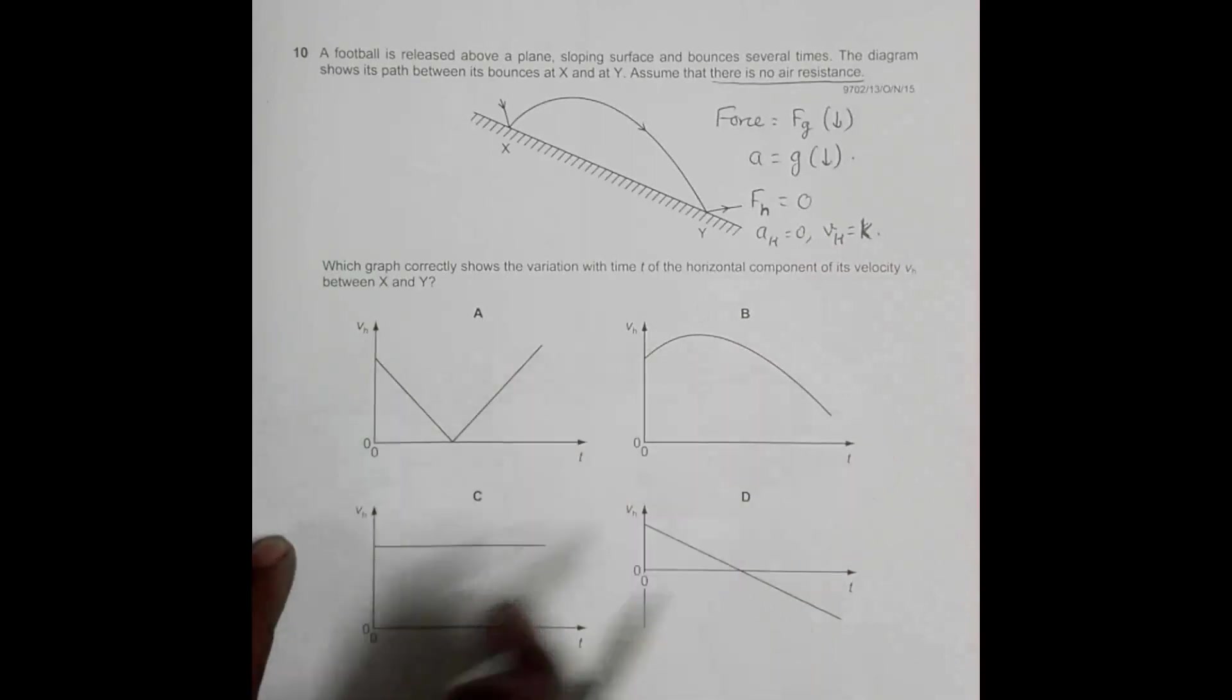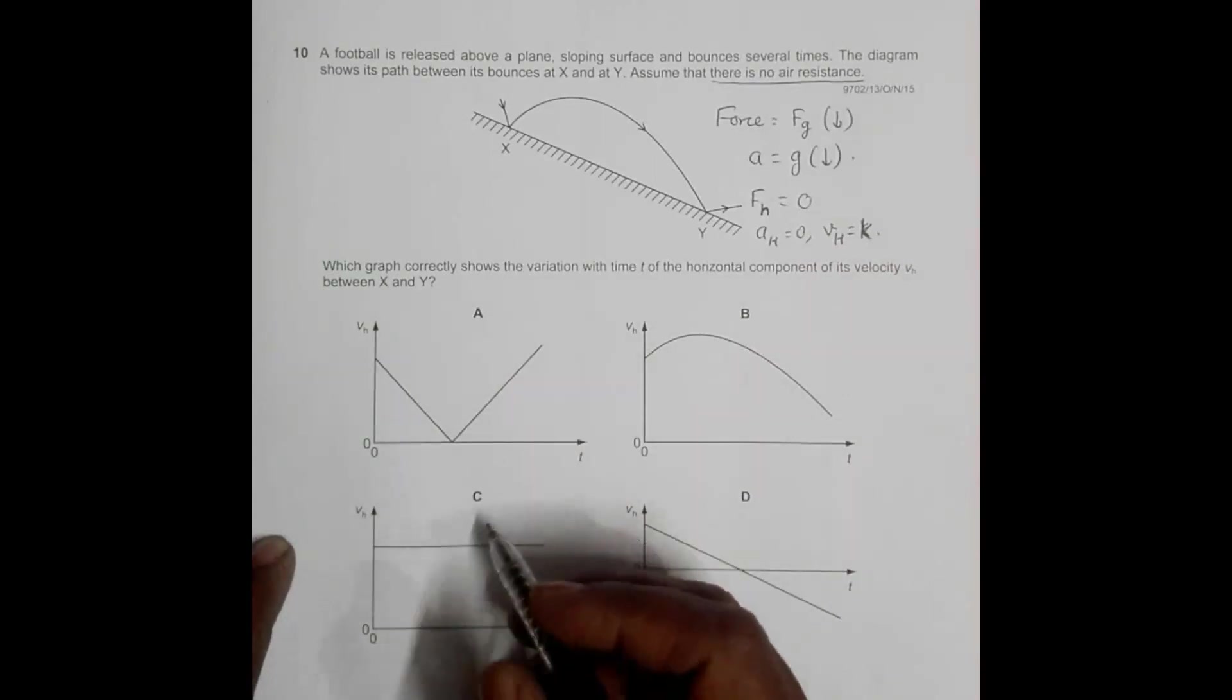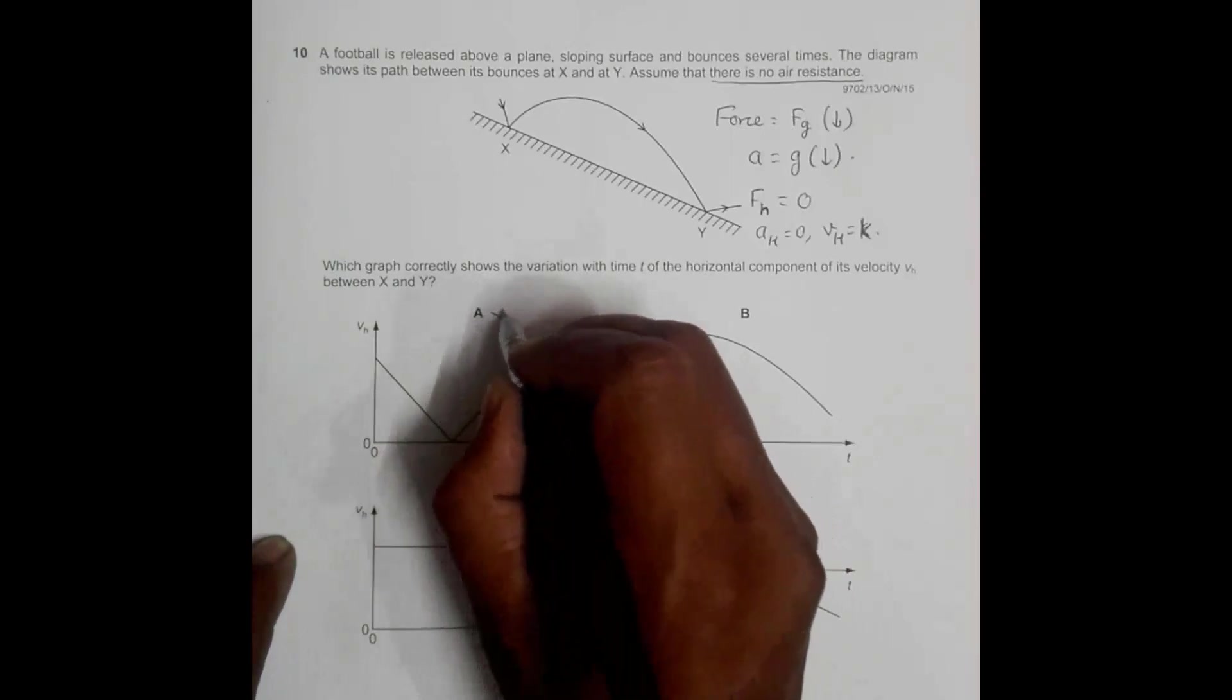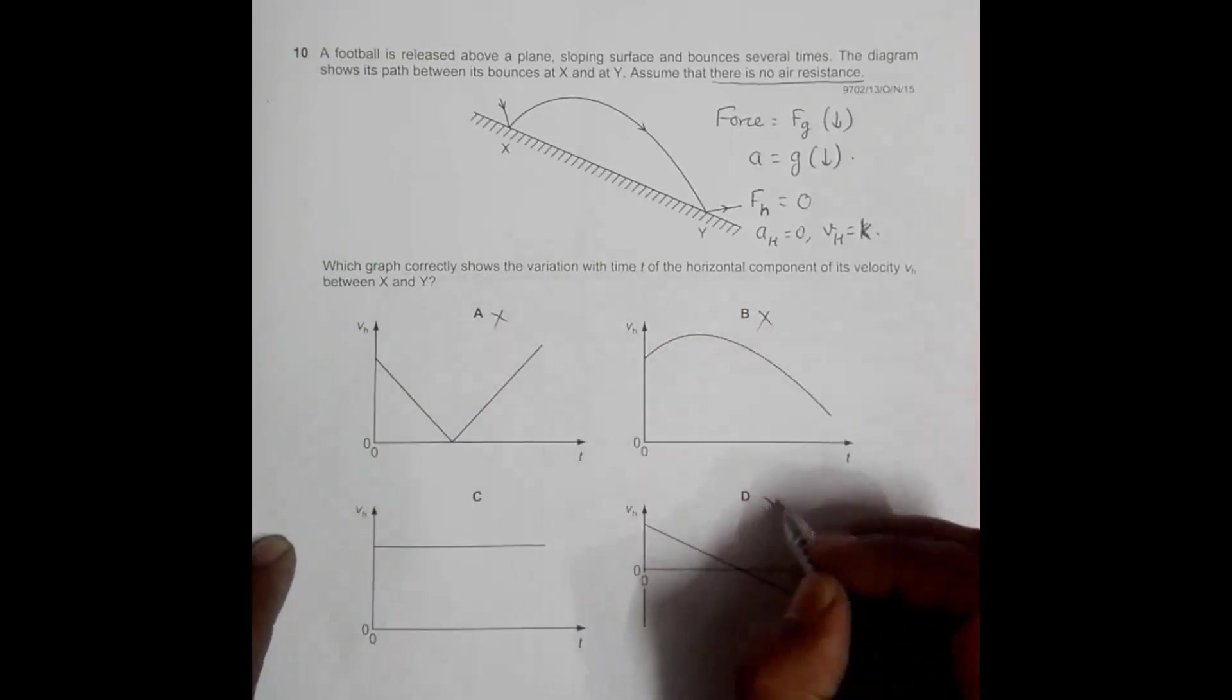And if you look at the graph, only choice number C qualifies and all the others disqualify.